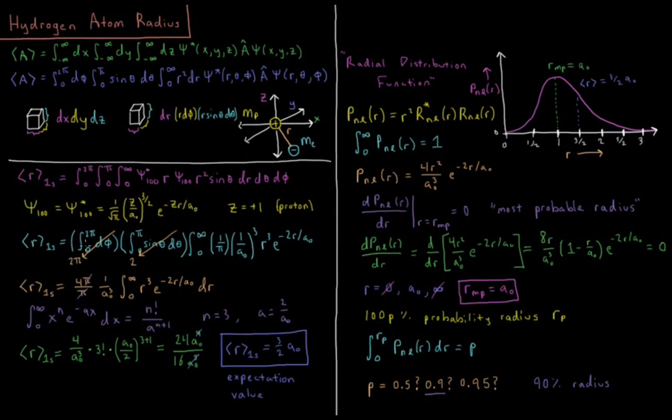So this expectation value, we can factor out this integral into three separate integrals of phi, theta, and r. There's no phi dependence in psi or in our operator, so we have integral 0 to 2pi d phi gives us 2pi. The integral from 0 to pi of sine theta d theta gives us 2, and ends up being negative cosine pi minus cosine 0, I believe.